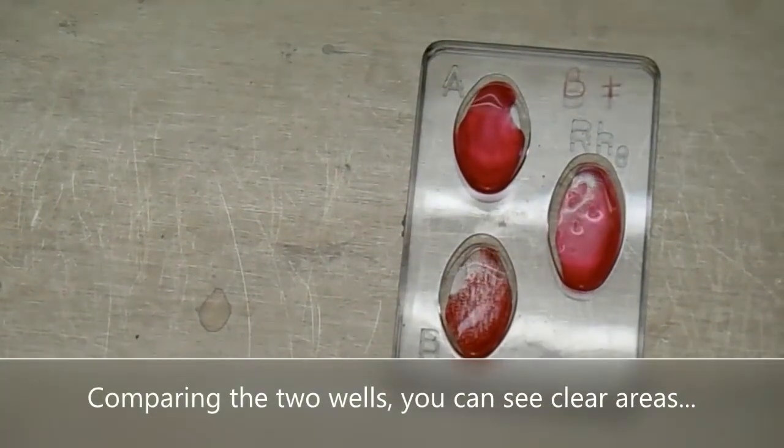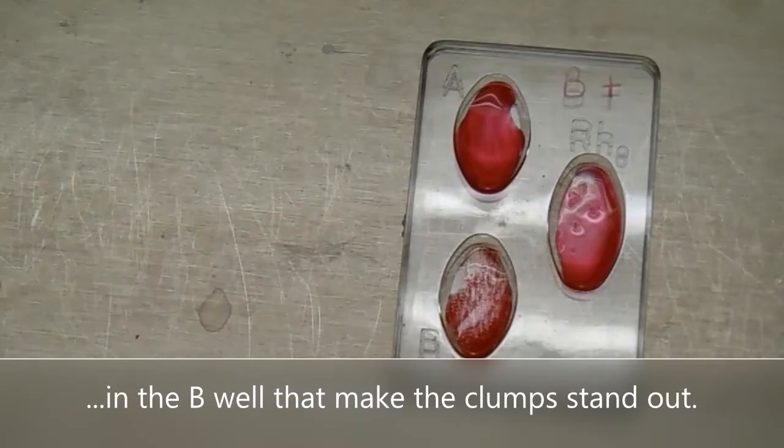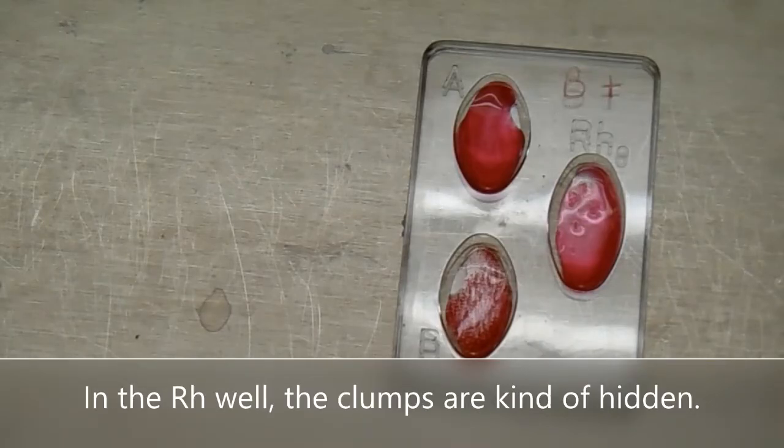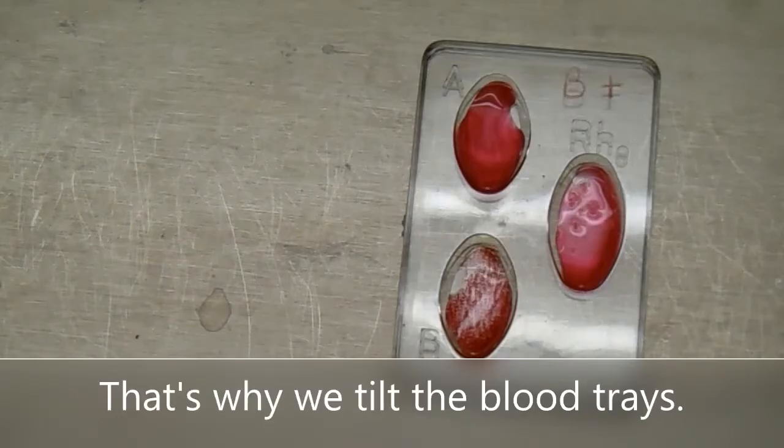Comparing the two wells, you can see clear areas in the B well that make the clumps stand out. In the RH well, the clumps are kind of hidden. That's why we tilt the blood trays.